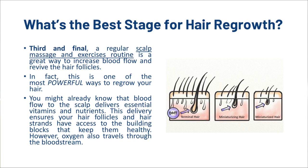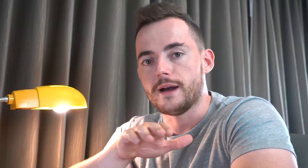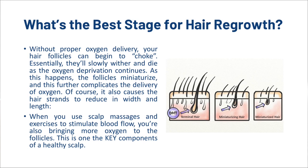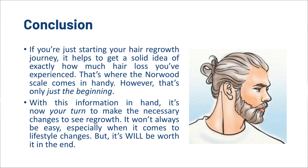Third and final, a regular scalp massage and exercise routine is a great way to increase blood flow and revive the hair follicles. This is one of the most powerful ways to regrow your hair. Without proper oxygen delivery, your hair follicles can begin to choke — they'll slowly wither and die as the oxygen deprivation continues. As this happens, the follicles miniaturize, which further complicates oxygen delivery and causes hair strands to reduce in width and length. When you use scalp massages and exercises to stimulate blood flow, you bring more oxygen to the follicles — one of the key components of a healthy scalp. Knowing where you fall on the Norwood Scale is just the beginning; with this information it's now your turn to make the necessary changes to see regrowth.